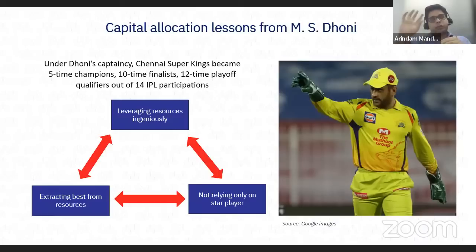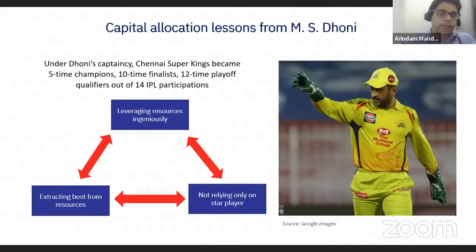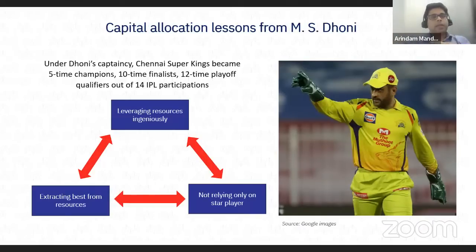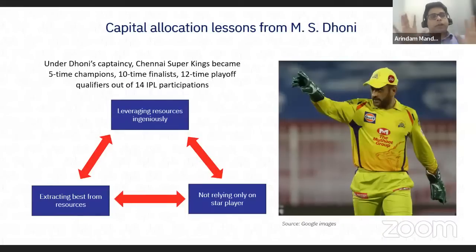Translating that to a corporate perspective: at the core, your business is generating operating cash flow. How do you allocate that into four buckets? The four buckets are investing for organic growth — capital expenditure — paying back debt if levels are unsustainable, buybacks, which are common globally but less so in India, and M&A. These are the four avenues to allocate operating cash flow to create shareholder value.